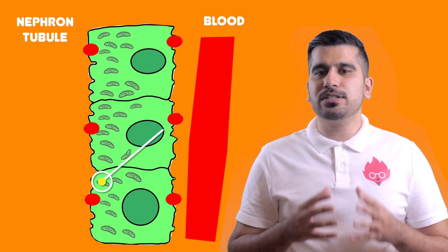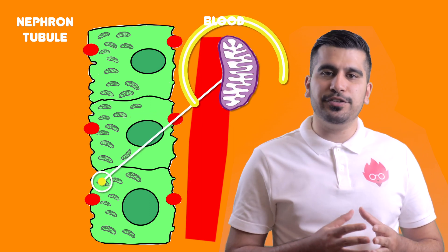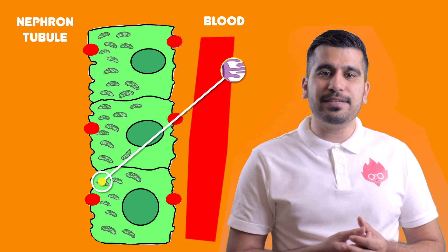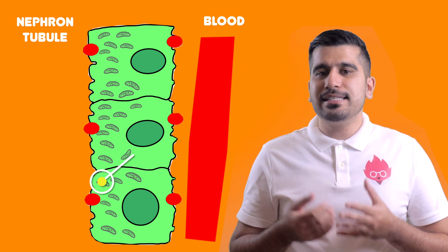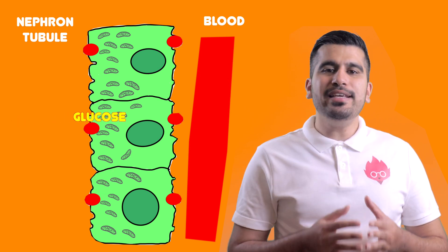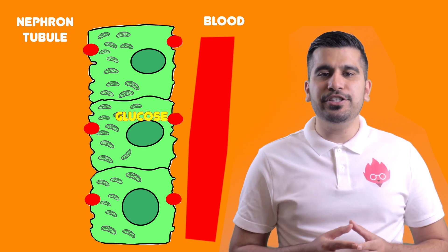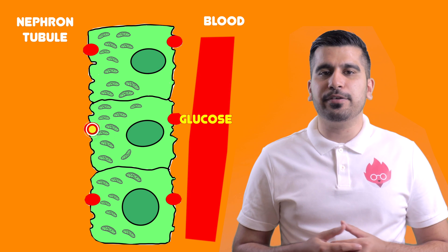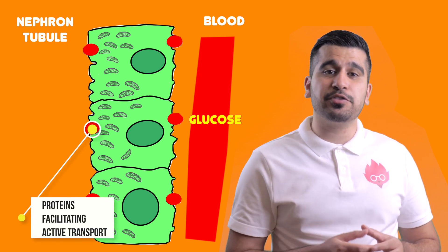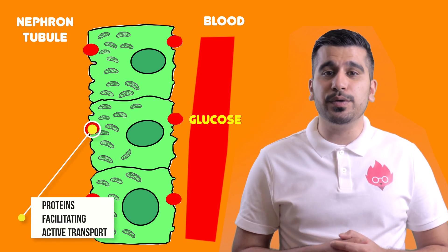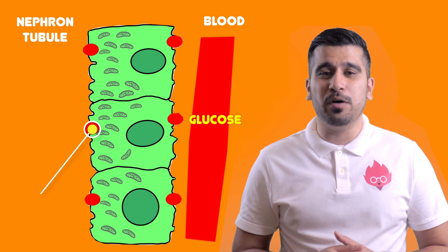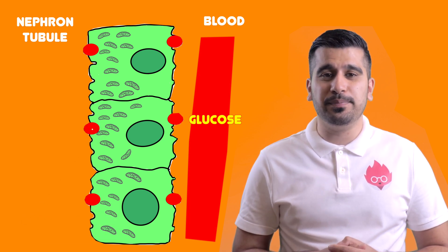The nephron has lots and lots of mitochondria, which provides energy for active transport. Selective reabsorption can only occur in this region of the nephron, as protein gates facilitating the active transport of glucose are only found in the proximal convoluted tubule.